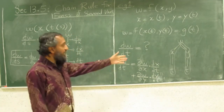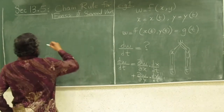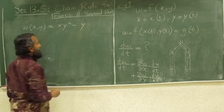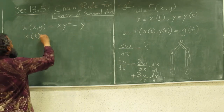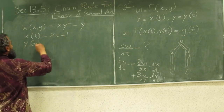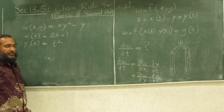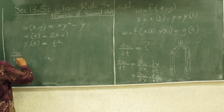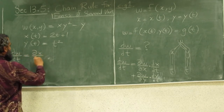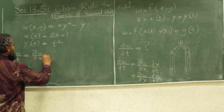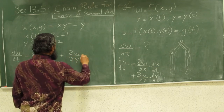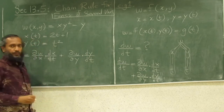Let's do a concrete example. Let w(x, y) = xy² − y, x(t) = 2t + 1, and y(t) = t². So dw/dt = (∂w/∂x)(dx/dt) + (∂w/∂y)(dy/dt).